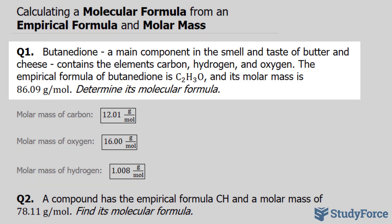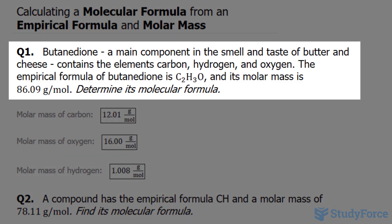In question one, we're asked: butanedione, a main component in the smell and taste of butter and cheese, consists of the elements carbon, hydrogen, and oxygen. The empirical formula of butanedione is C2H3O, and its molar mass is 86.09 grams per mole. Determine its molecular formula.